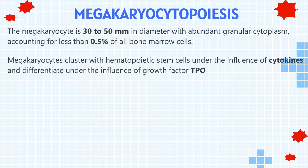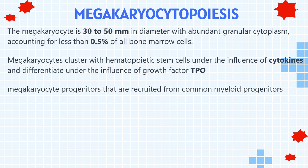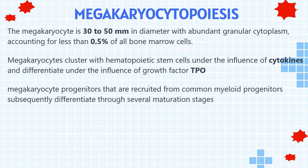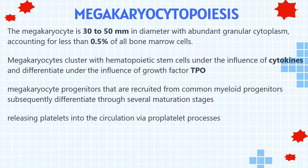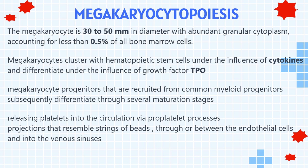Megakaryocytes cluster with hematopoietic stem cells under the influence of cytokines and differentiate under the influence of growth factor thrombopoietin, from megakaryocyte progenitors recruited from common myeloid progenitors, subsequently differentiating through several maturation stages. They release platelets into the circulation via proplatelet processes — projections that resemble strings of beads — through or between endothelial cells and into the venous sinuses. Megakaryocytes are also found in the lungs.